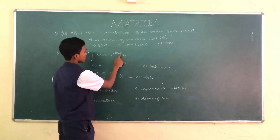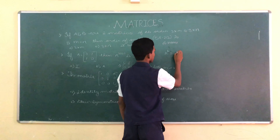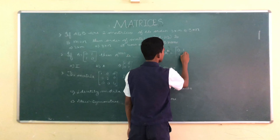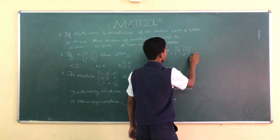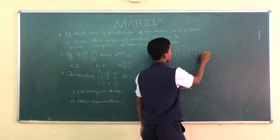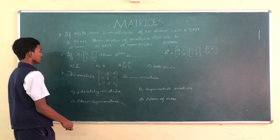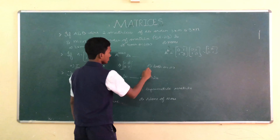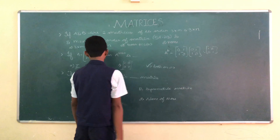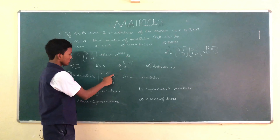Next question: if A = [0,1; 1,0], then A^2020 = ? Let's find A² first. A² = [0,1; 1,0] × [0,1; 1,0] = [1,0; 0,1], which is the identity matrix. Since the identity matrix raised to any power is still the identity matrix, the correct answer is I.